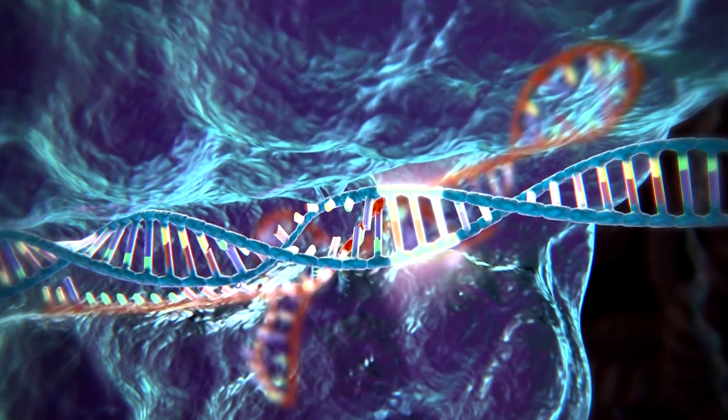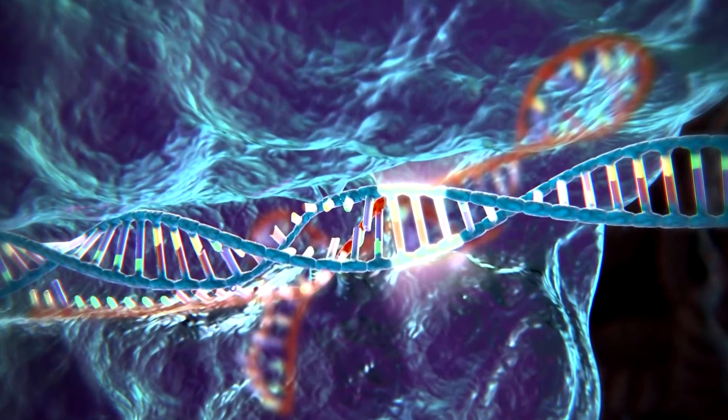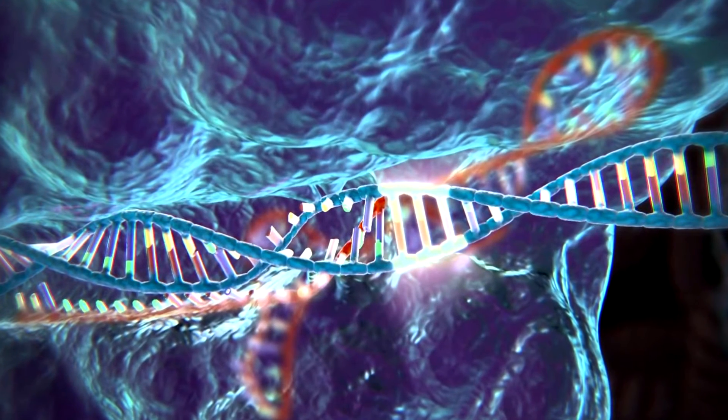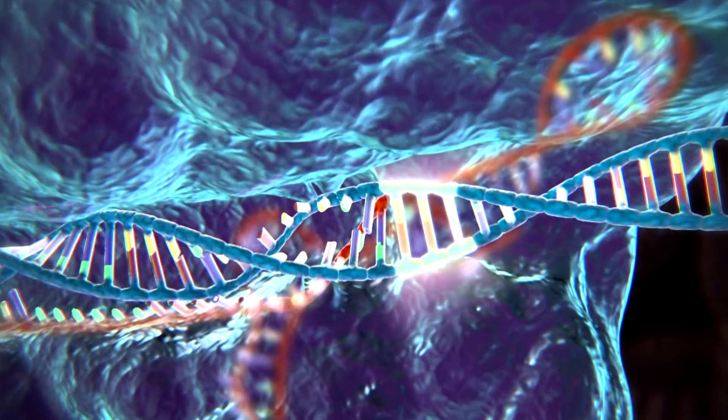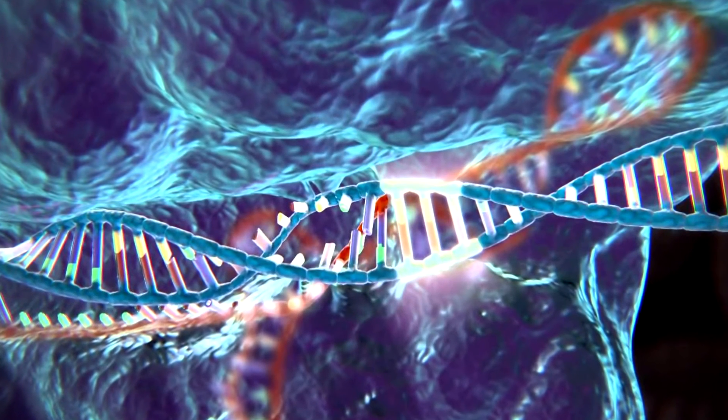CRISPR works like a pair of genetic scissors, allowing scientists to cut very specific sections of DNA out of an organism, such as inherited genes that may lead to disease, and replace them with something more beneficial.